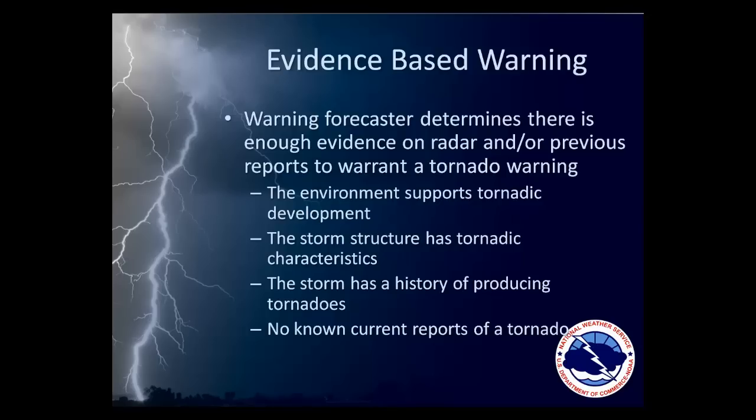Remember, a forecast warning — or a warning where a confirmed tornado is not occurring — is based on the warning forecaster's knowledge of the environment, structure of the storm, and his or her ultimate decision that the storm has a relatively high potential to produce a tornado. But as Section 1 describes, our current level of scientific knowledge and the characteristics of the storms themselves means that severe weather will not always occur with every warning.